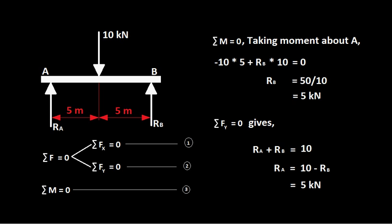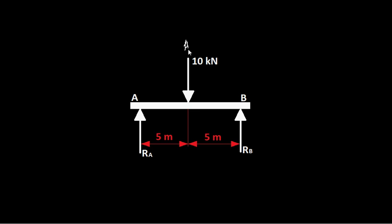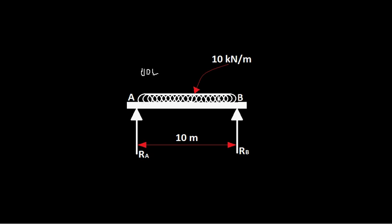Moving on to a different case: a uniformly distributed load, or UDL. The earlier single force is called a point load — the load acts at a single point. In the UDL case, the load is distributed uniformly along the beam. The notation shows 10 kilo Newton per meter, meaning there is a 10 kilo Newton load acting in every meter of the beam.